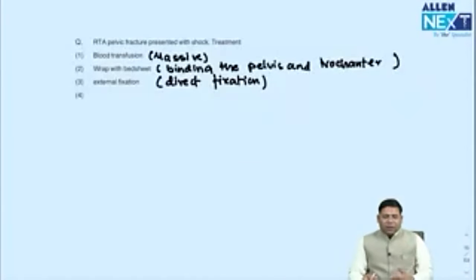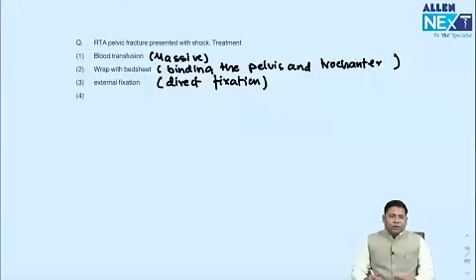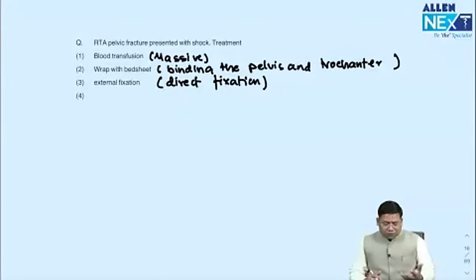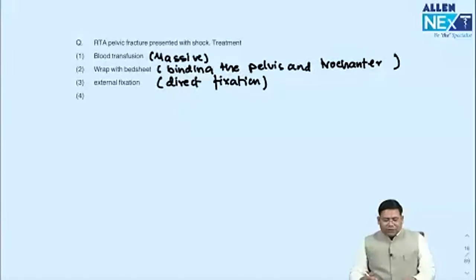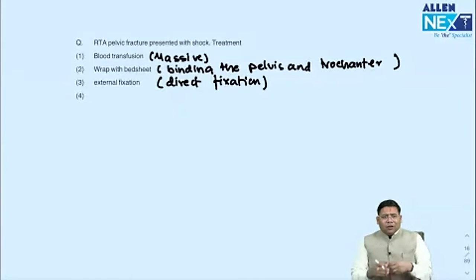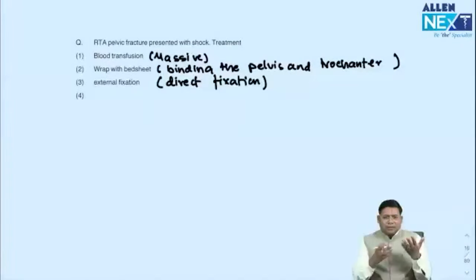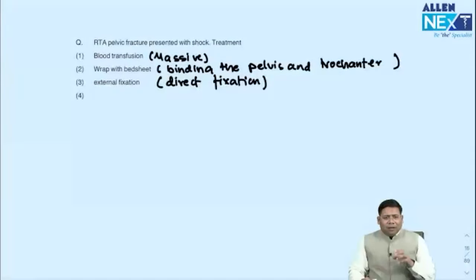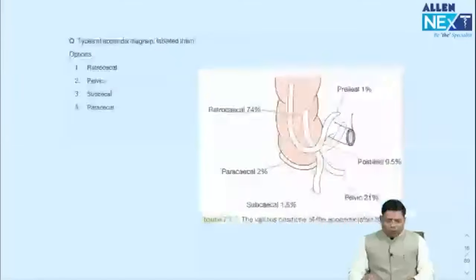RTA with pelvic fracture, patient in hypotension and shock — what is the next line of treatment? Massive blood transfusion should be done, and binding the pelvis at the trochanter with a bed sheet or external fixation. Resuscitation is very important. First stabilize the patient, then go for fixation or reduction.